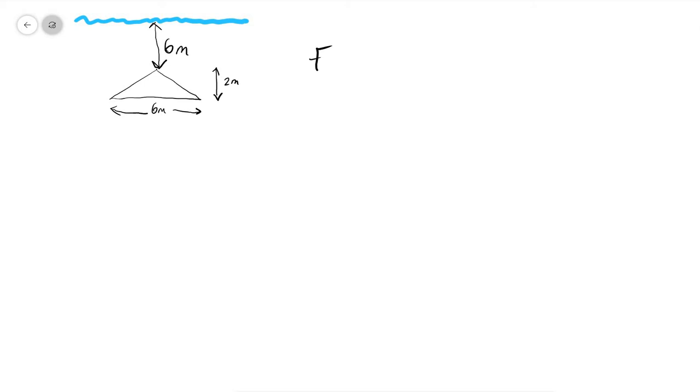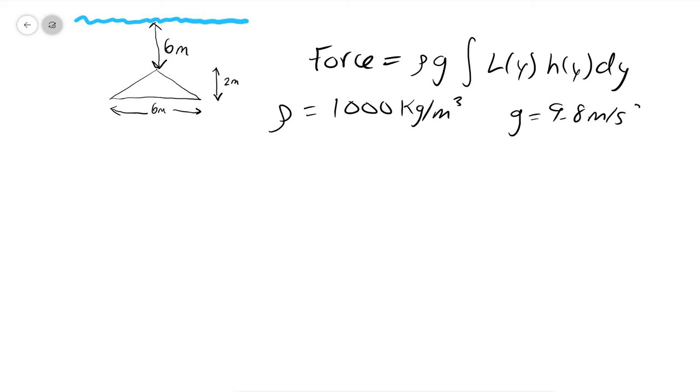And just like in the previous video, we're going to be using the same force equation where we have rho and g as our two constants, and then we have our length and height functions being multiplied. In this case, rho is going to be the weight density of water, which is measured at 1,000 kilograms per meters cubed, and g, of course, is gravity, which is 9.8 meters per second squared.